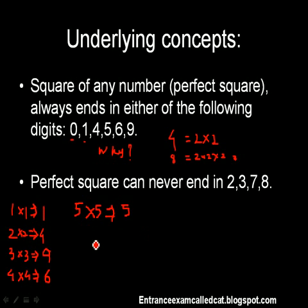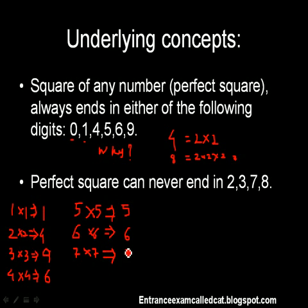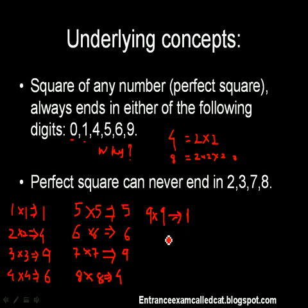Then 6 squared is 36, so it ends in 6. Any number ending with 7 will have 7×7 = 49, so the unit place will be 9. In case of 8, it will be 4 because 8² = 64. In case of 9, it will be 1 because 9² = 81. In case of 10, or any number ending with 0, it will obviously be 0. So a perfect square can never end in 2, 3, 7, or 8.